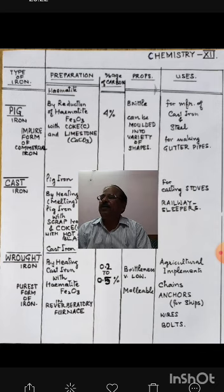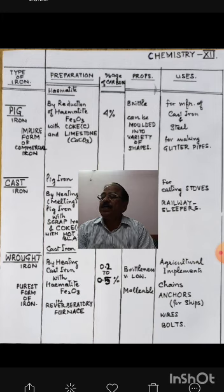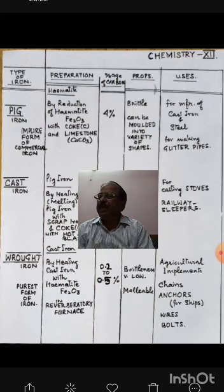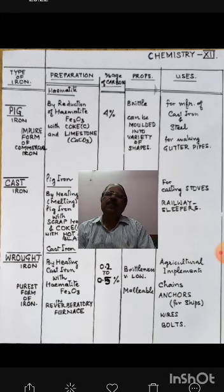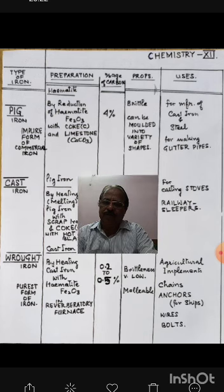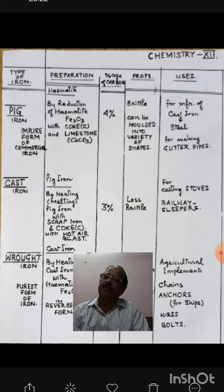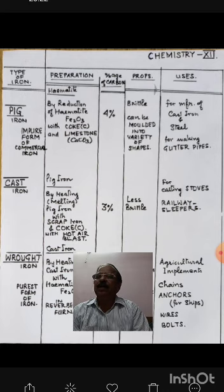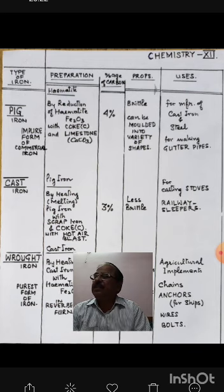The second type of iron is cast iron. Cast iron is made from pig iron obtained from blast furnace. It is made by heating or melting pig iron along with scrap iron and coke, and we heat it by passing a hot air blast. How much carbon does cast iron contain? It contains 3% carbon. As for properties, it is quite brittle, but comparatively less brittle than pig iron. The uses of cast iron — it is used for making stoves and railway sleepers.